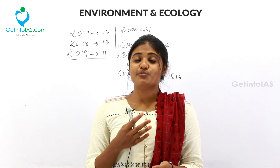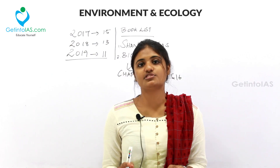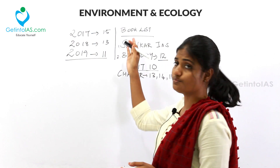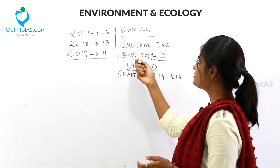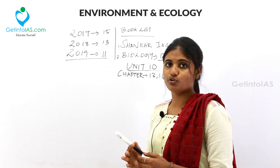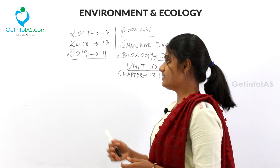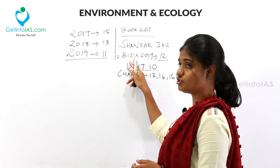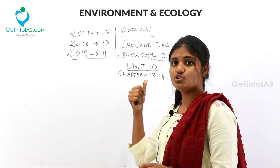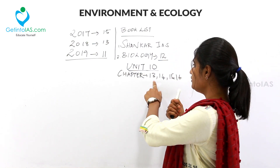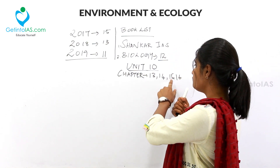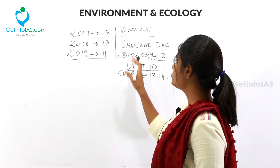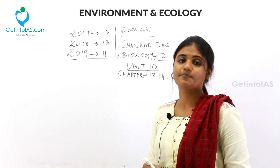The books to refer to can be quite confusing for aspirants, so let's look into the book list. First, Shankar IAS is a static book, but before moving into that, you should learn the 12th standard biology book. Specifically, unit 10, chapters 13, 14, 15, and 16 have to be done and dusted before touching the Shankar IAS textbook.